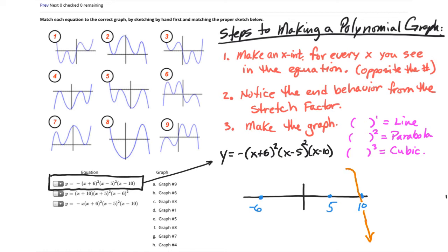As you go through the graph and make your line, then you're going to turn around and come to the next one. And the next one's going to have x minus 5 to the second power, which means that's going to be a parabola. So we're going to bounce off the x-axis and make a parabola at 5.